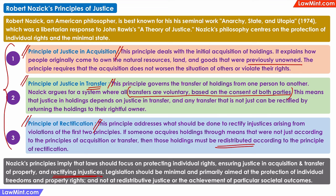And the government should intervene only if rectification is required. What Nozick was opposed to was redistributive justice or attempts to achieve social outcomes through legislation. For example, in India in the early 1960s, the government started passing land ceiling legislations and land reforms were conducted to limit land holdings and redistribute the land. This would have been against Nozick's principles, because if the landowner had acquired or inherited the land lawfully, then the government was interfering in his individual rights to achieve social outcomes. But these land ceiling and land reforms would align with John Rawls' principles, because the government was attempting to redistribute land and achieve some social outcomes.